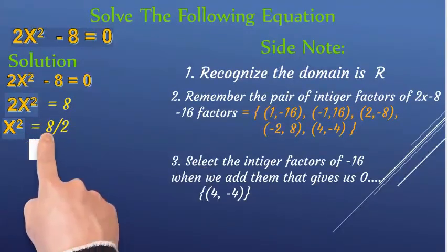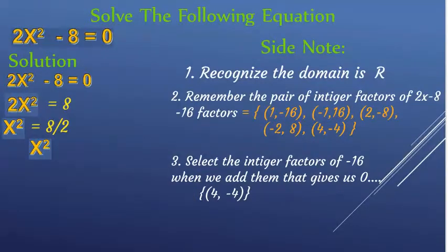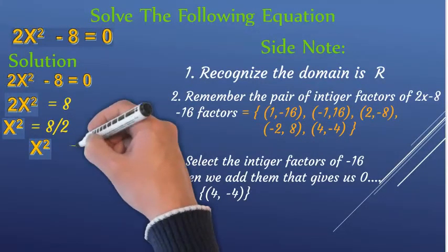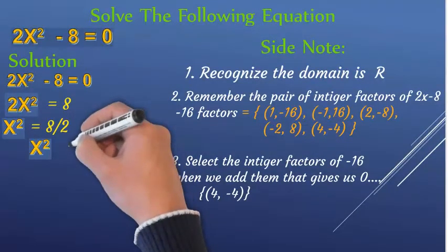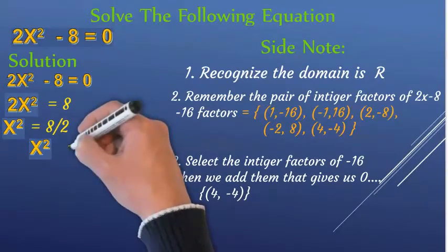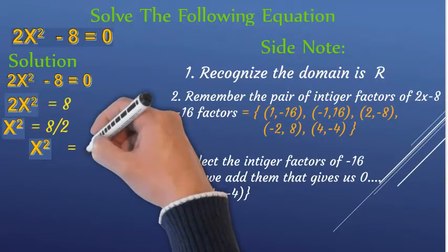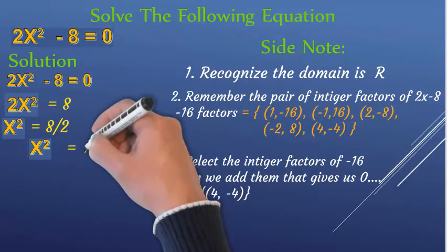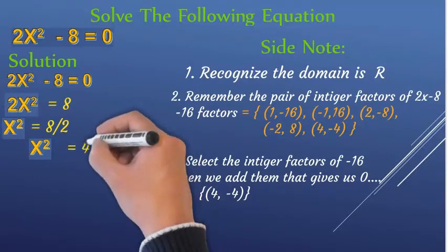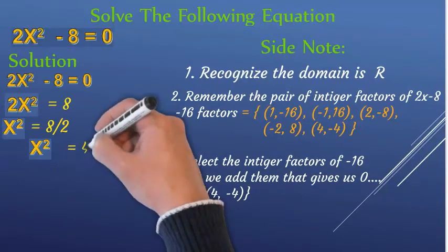When you square a number and you get 4, taking the square root, x is equal to positive or negative 2.